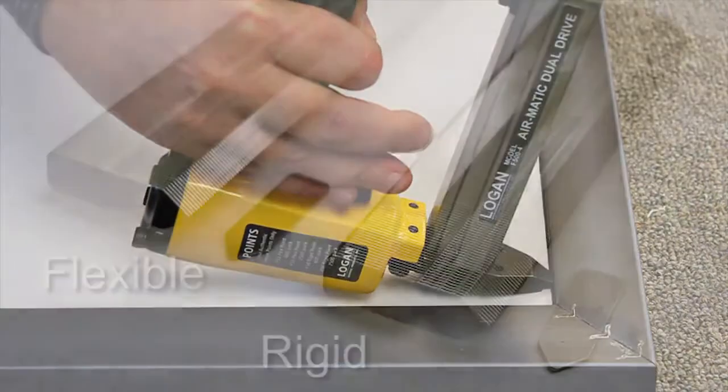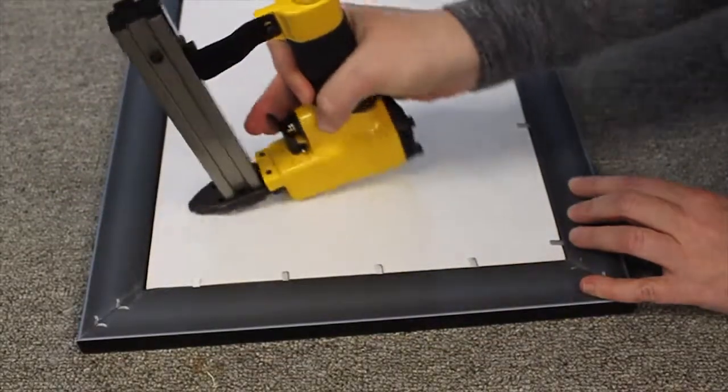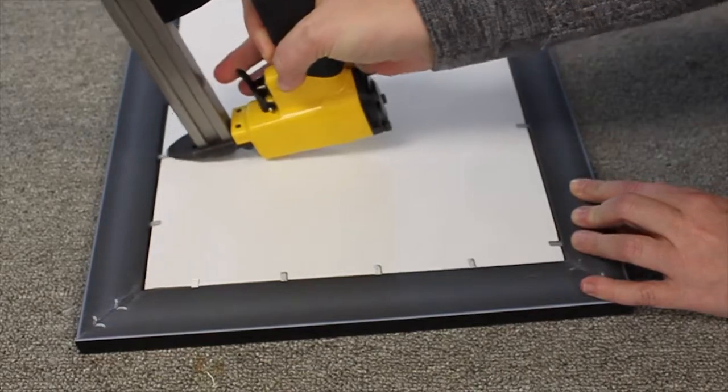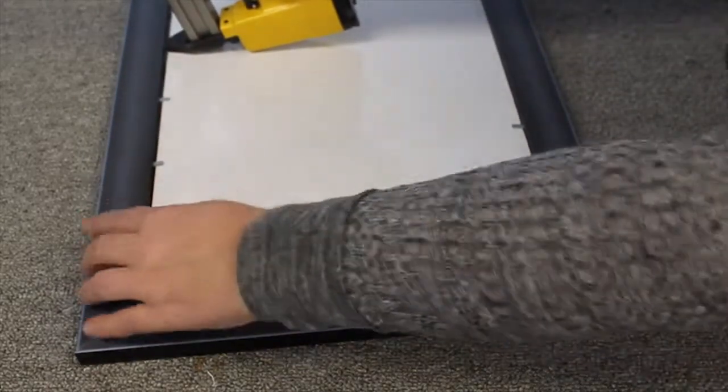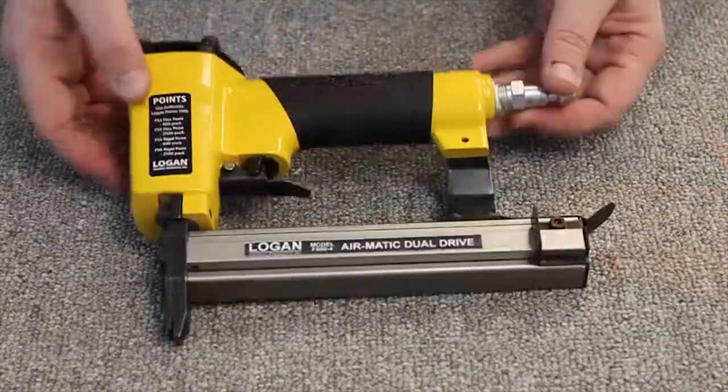two different point types: flexible or rigid. Rigid points are all-purpose and must be used for harder woods. Flexible points can be used on softer woods and can be bent up to change the framed art later.